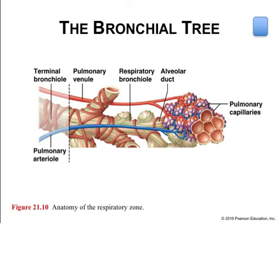The conducting zone of the respiratory tract ends when air reaches the terminal bronchioles. The terminal bronchioles branch into two or more smaller respiratory bronchioles surrounded by a thin layer of smooth muscle. The respiratory zone begins with the respiratory bronchioles, which have alveoli budding from their walls. Each respiratory bronchiole branches into two or more alveolar ducts, which also have alveoli attached to their walls. The alveolar ducts end in alveolar sacs—grape-like clusters of alveoli—where the inspired air has arrived and gas exchange can take place. The conducting division's job is mainly to get air down into the respiratory division, and the respiratory division's job is to swap oxygen for carbon dioxide.